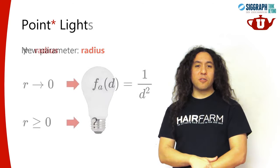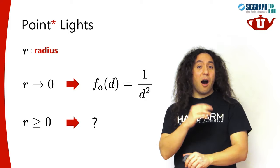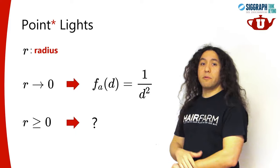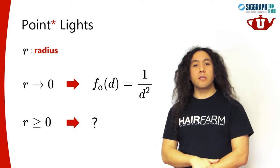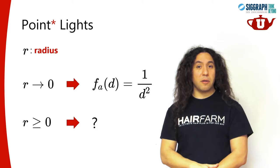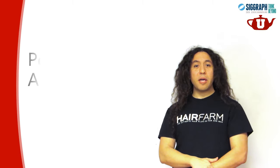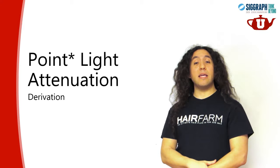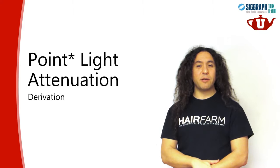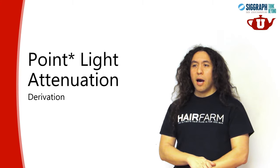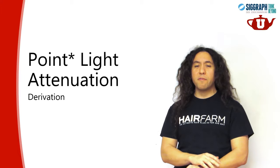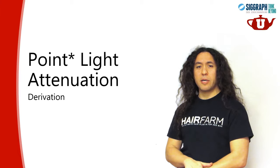Let's say r is our radius. If r is 0, we know that the inverse square attenuation function is the correct one. But what if r is greater than 0? That's what we're going to find out. I'm going to derive the equation for this slightly modified point light and its attenuation function. It's going to be a little bit mathy, but if you're familiar with rendering-related math it'll be easy. If not, don't worry - I'll walk you through it.